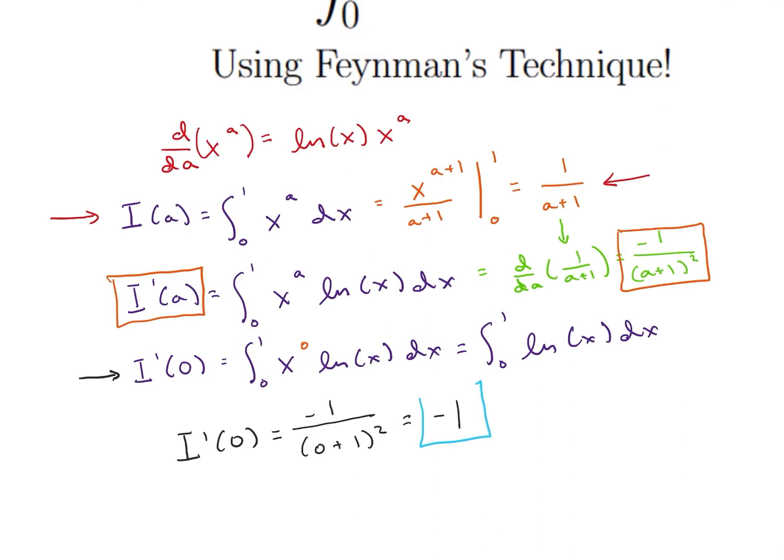And using this clever technique, we're now able to solve this without using any integration by parts. All we did was kind of work backwards and use that dummy variable inside of our integral, this dummy variable a. So that's the beauty of Feynman's technique, using that dummy variable to kind of trick our way into a solution.